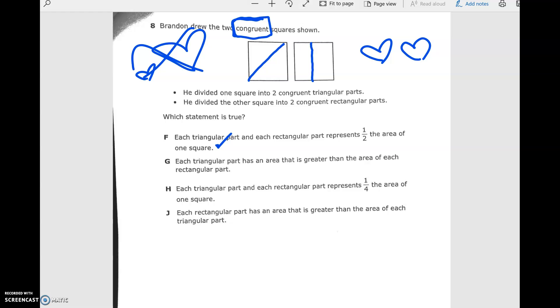Each triangular part has an area that is greater than each of the area of the rectangular parts. It might look like it depending on your perspective, but that's not true because this is exactly half of that square and this is exactly half of that square. Each triangular part and each rectangular part represents one fourth. No, if it were one whole big piece, but they're two squares. They're each one half.